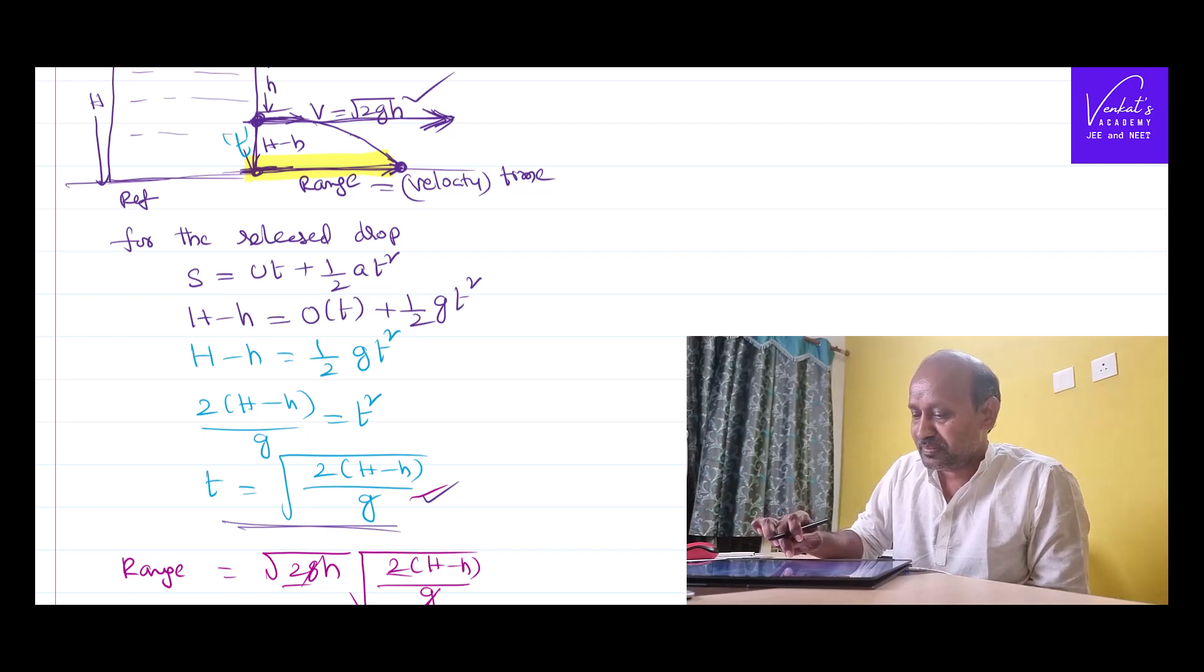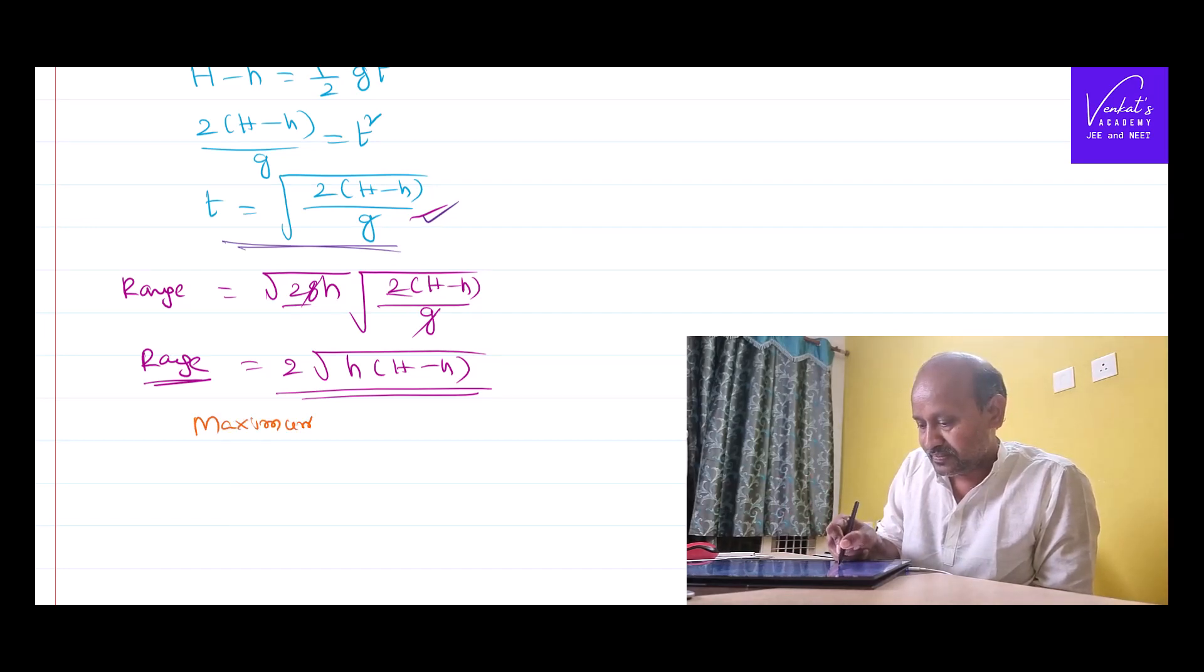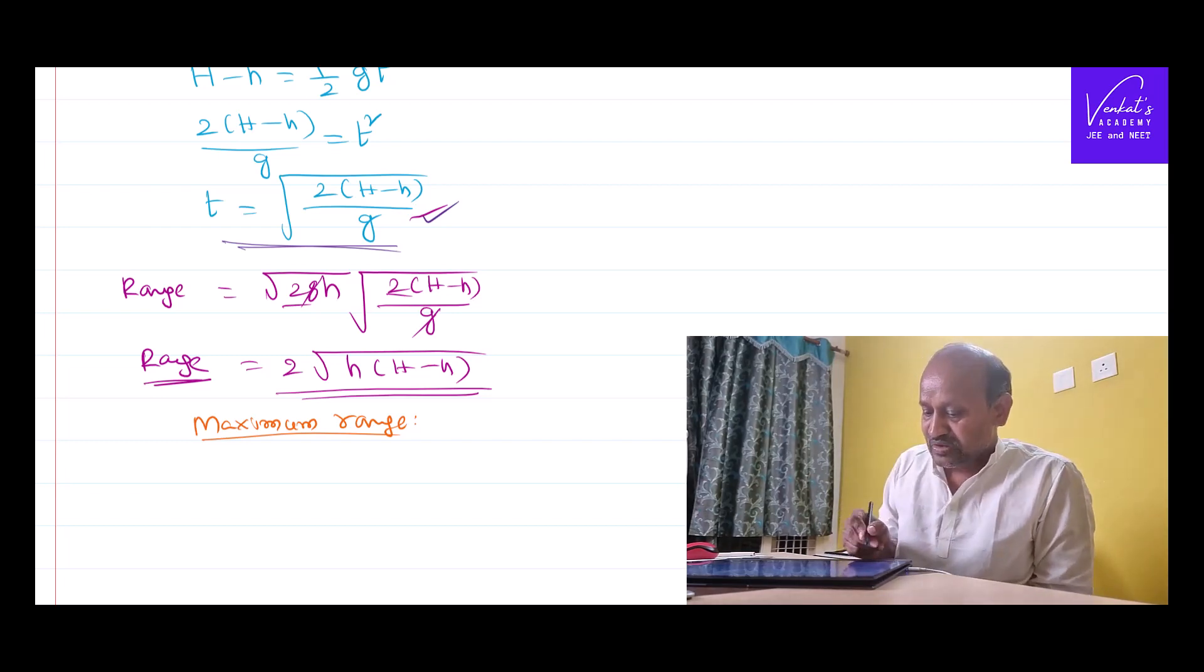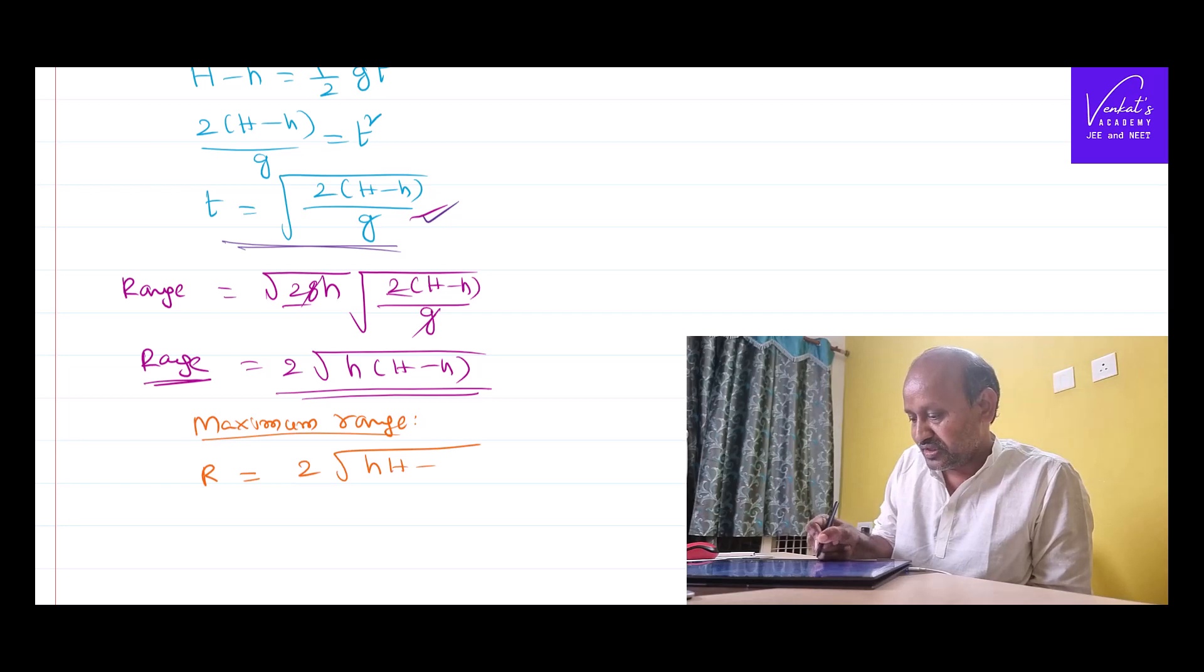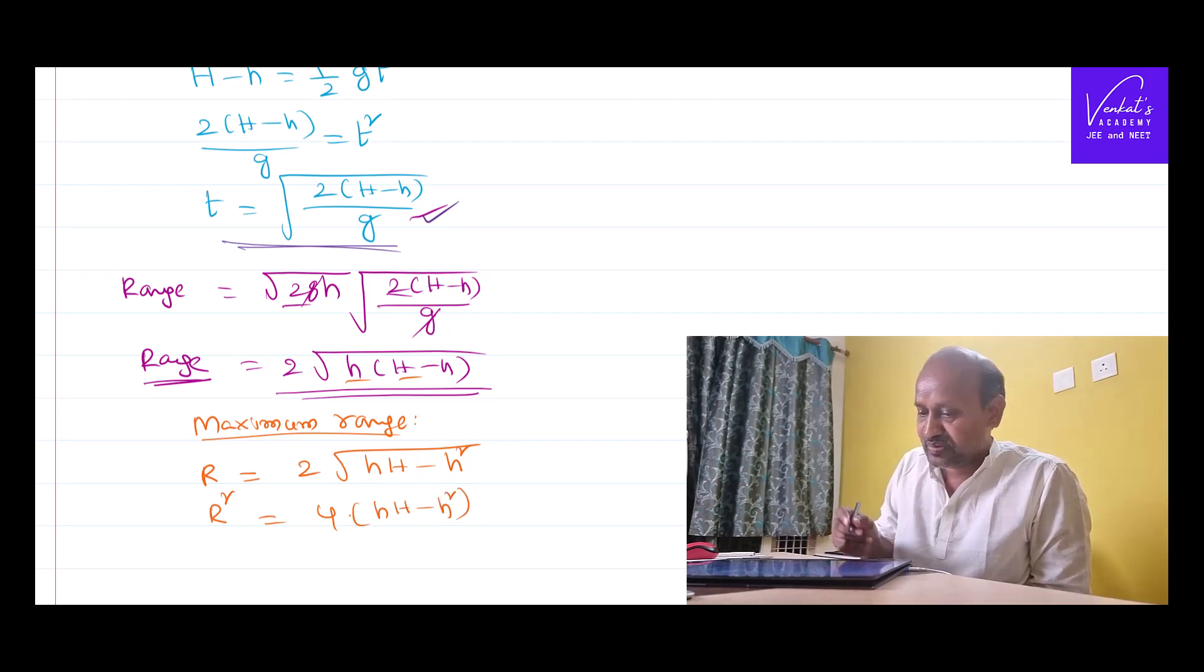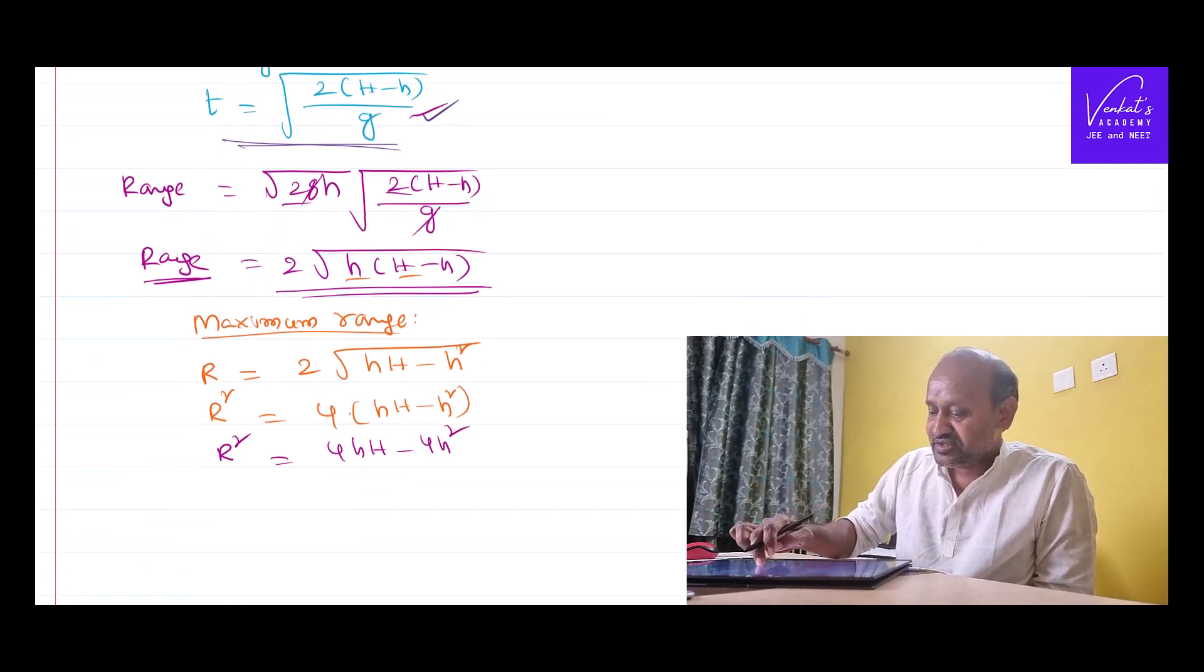Now, we want to continue this discussion further. We would like to know what the maximum value of that range is. Our aim is to find out maximum range. Let me call range R as 2 times square root of h(H minus h). Let's square this. R square equals 4. Root will go. R square is 4hH minus 4h square.